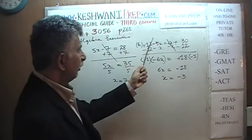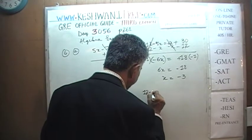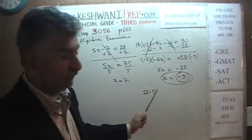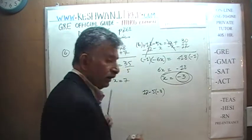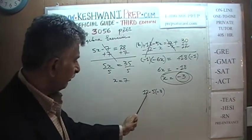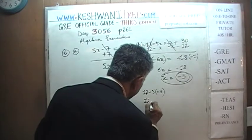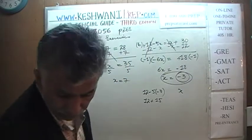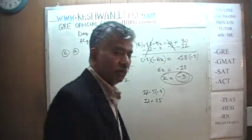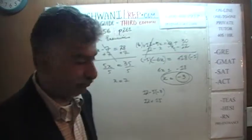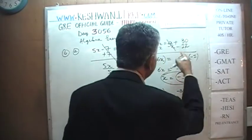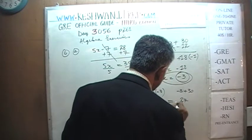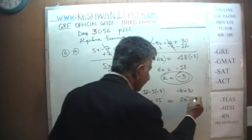We can quickly verify. We are told 12 minus 5x, and we're claiming x is negative 3. A negative times negative gives positive, so it's 12 plus 15. On the other side, x plus 30 with x = negative 3 gives negative 3 plus 30, which is 27. And 12 plus 15 is indeed 27. It works.